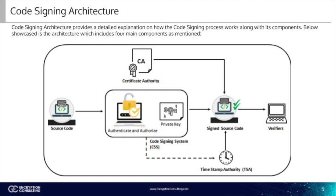Certificate authority: developers or sources issuing code should use certificates from authentic certificate authorities, as the certificate enables the process of authenticating the source. Certificates issued by authentic certificate authorities must comply with standard certificate policies, such as NIST Interagency Report 7924, while issuing certificates.